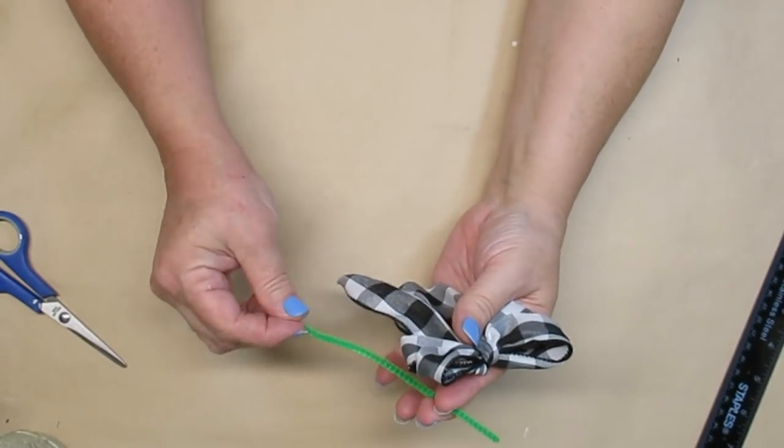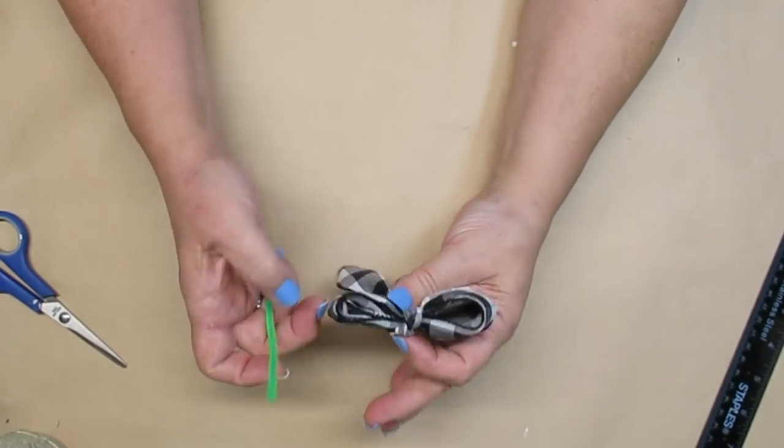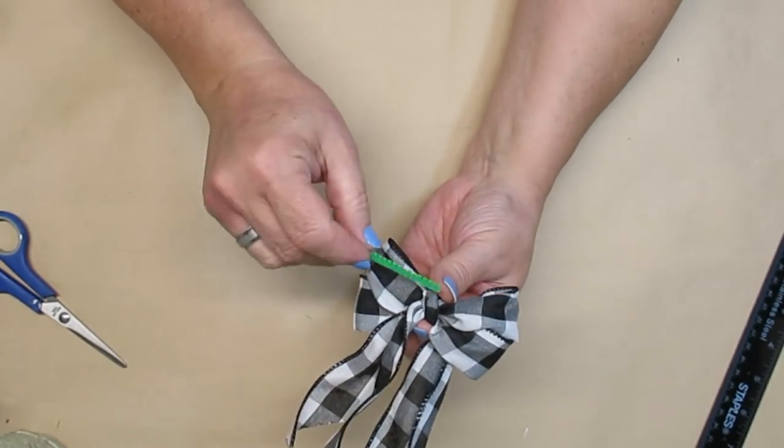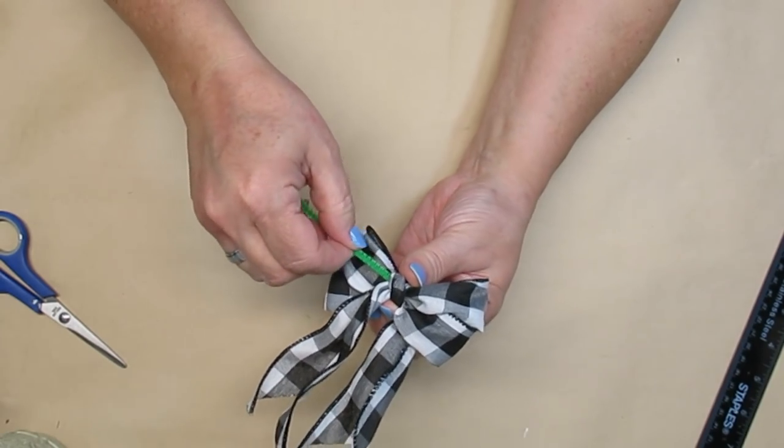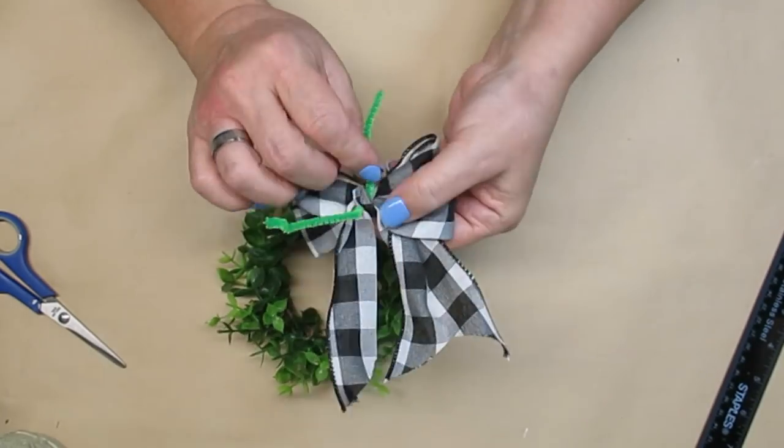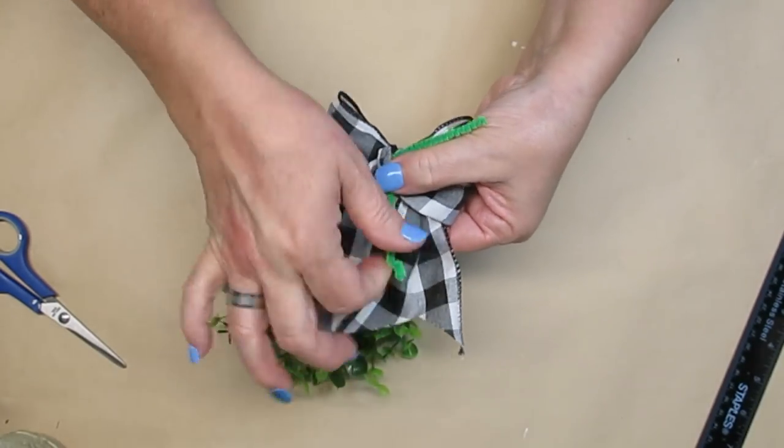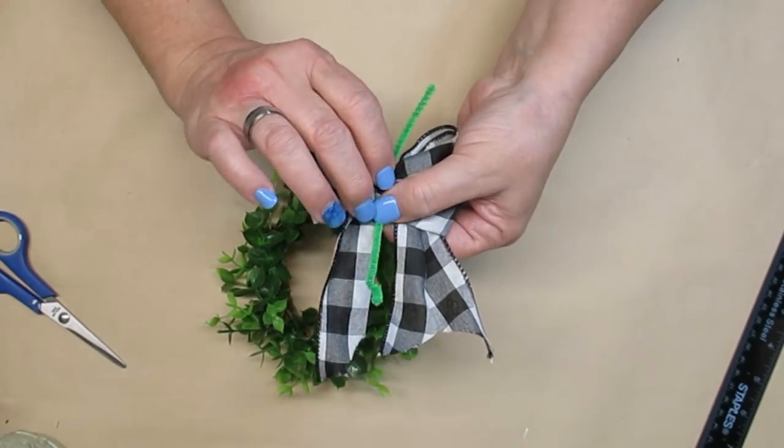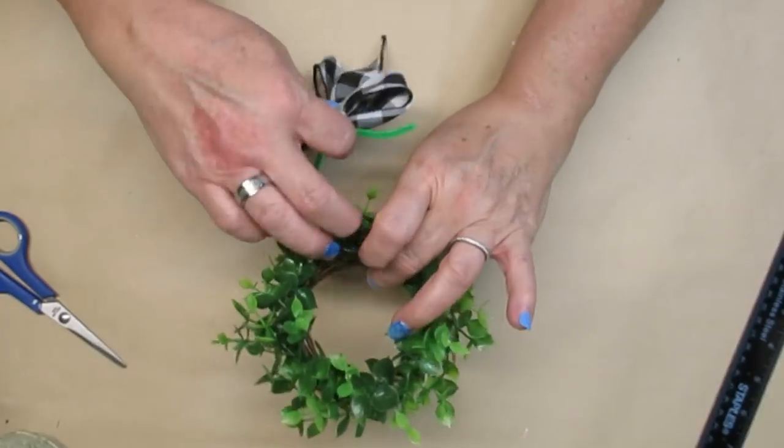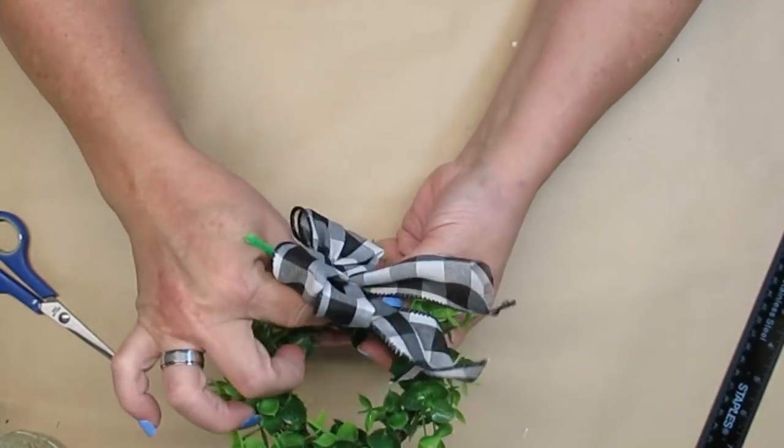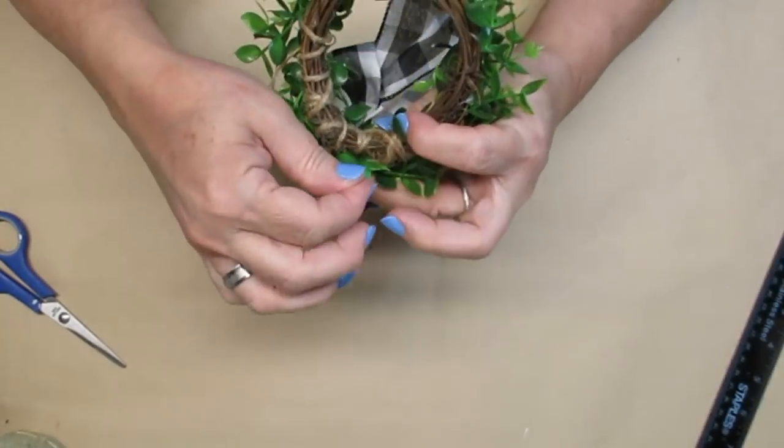I made another two-finger bow using some two and a half inch buffalo check ribbon. I folded it in half and it is wired. Now I'm going to take a chenille stem and push it through the loop at the back so that gives me the ability to twist it onto the wreath.